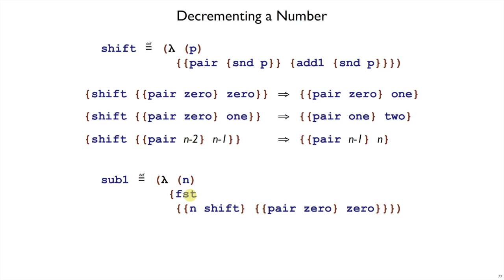And you can go double-check that sub1 of 1, in fact, gives you 0. All you have to do is perform the substitution here and then follow through the evaluations. And once you have sub1, you know how to make subtraction, because subtracting n minus m is just using sub1 m times on n.